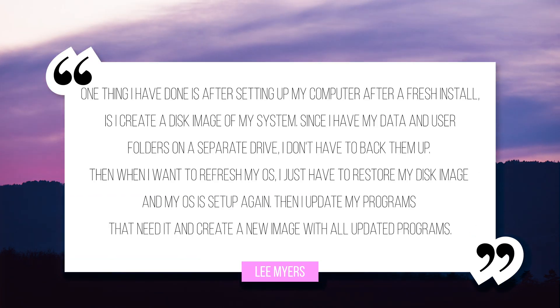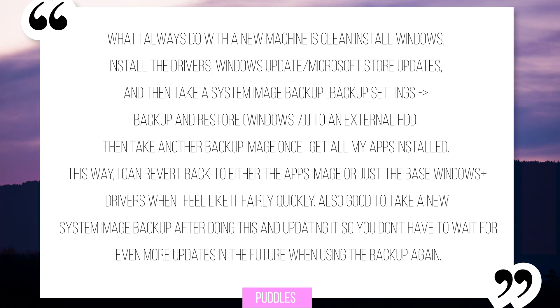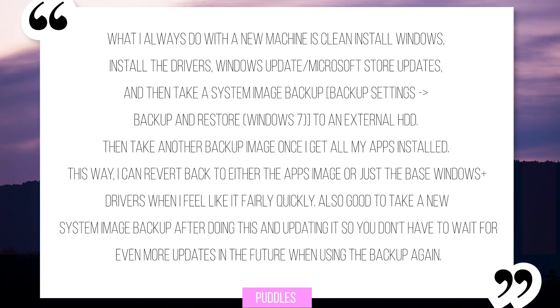Lee Myers says: after setting up my computer after a fresh install, I create a disk image of my system. Since I have my data and user folders on a separate drive, I don't have to back them up. Then when I want to refresh my OS, I just restore my disk image and my OS is set up again — then I update programs that need it and create a new image with all updated programs. Puddles said: clean install Windows, install drivers, Windows Update, Microsoft Store updates, then take a system image backup using Backup and Restore on Windows 7 to an external hard drive — then take another backup once all applications are installed. This also works with several different Windows versions.